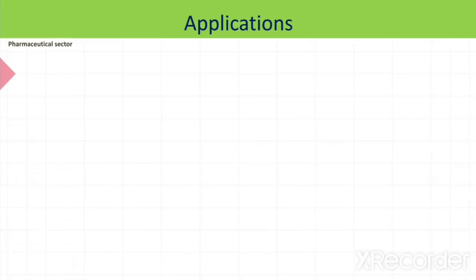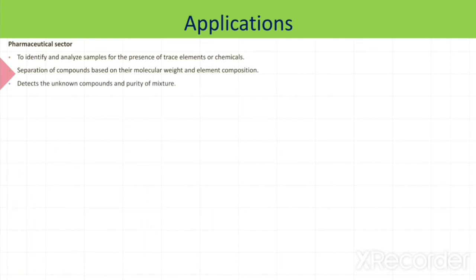Now what are the applications? First, pharmaceutical sector. Chromatography is widely used in the pharmaceutical sector for the identification of different types of trace molecules or chemicals. It is used to separate out different molecules based on their molecular weight and composition. It is also used to detect the purity of mixture and in drug development.